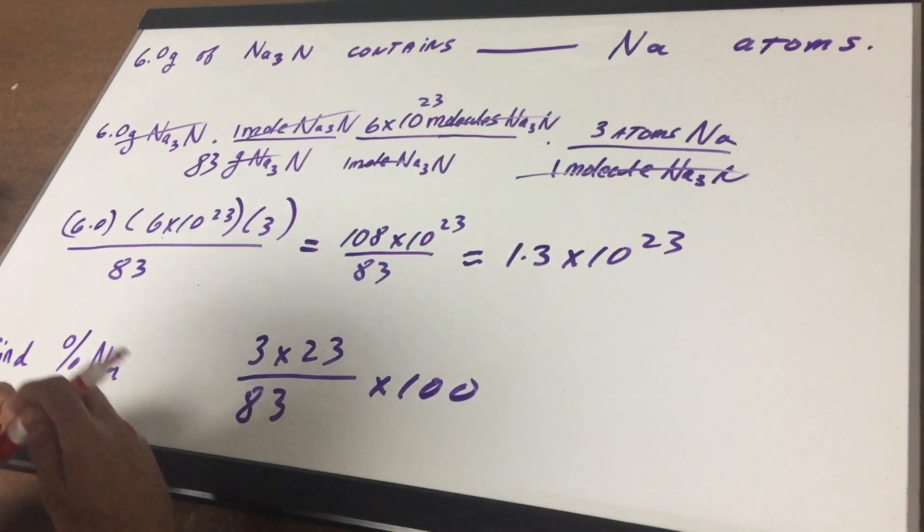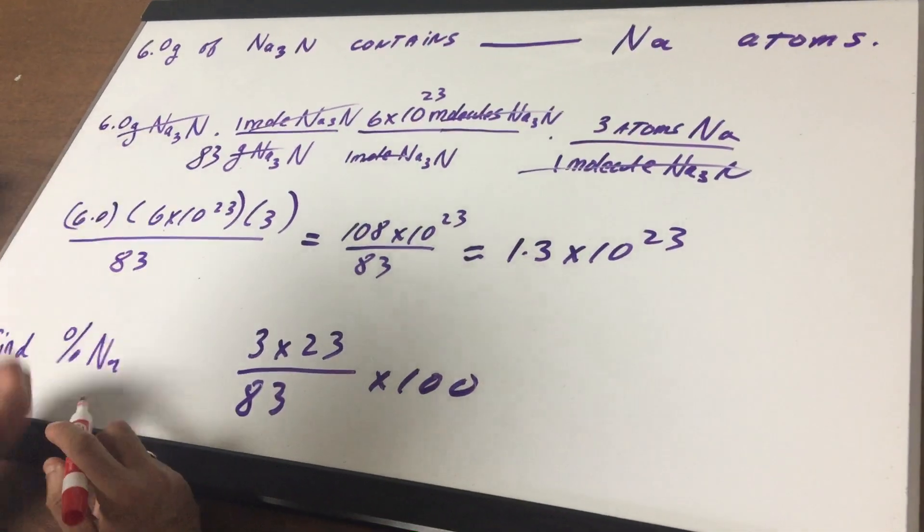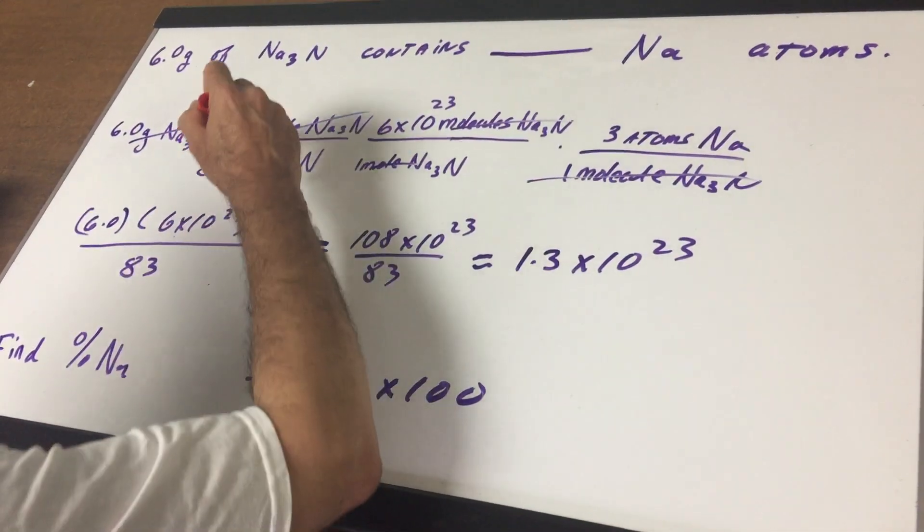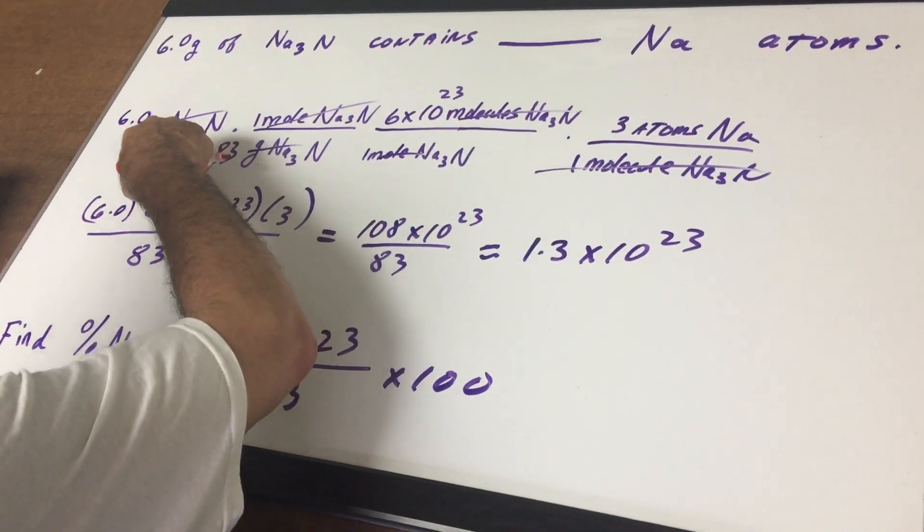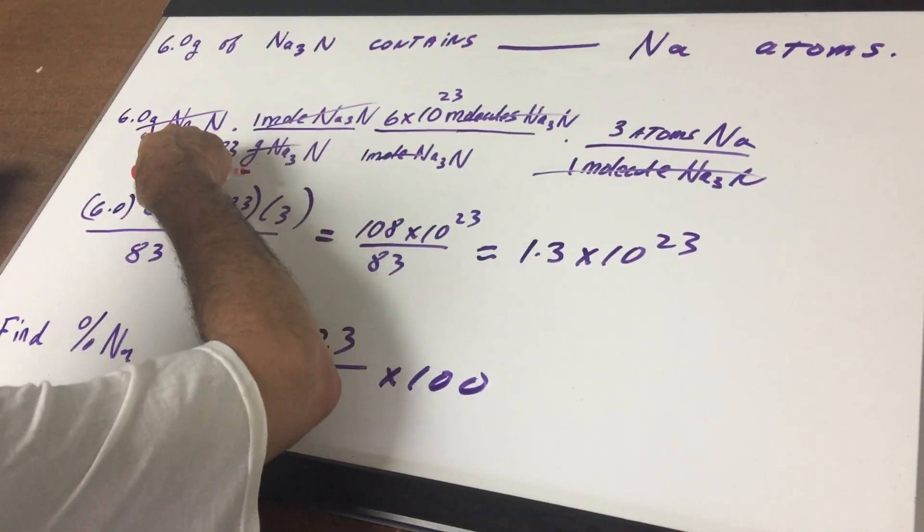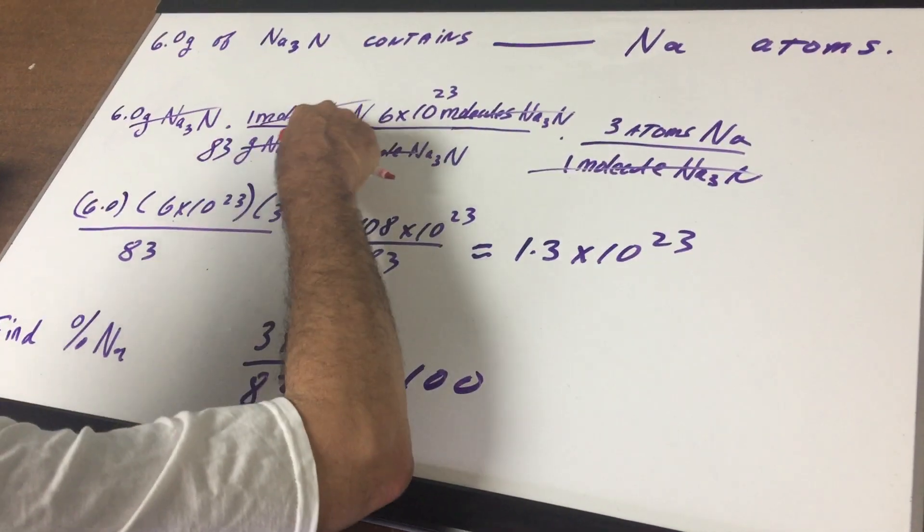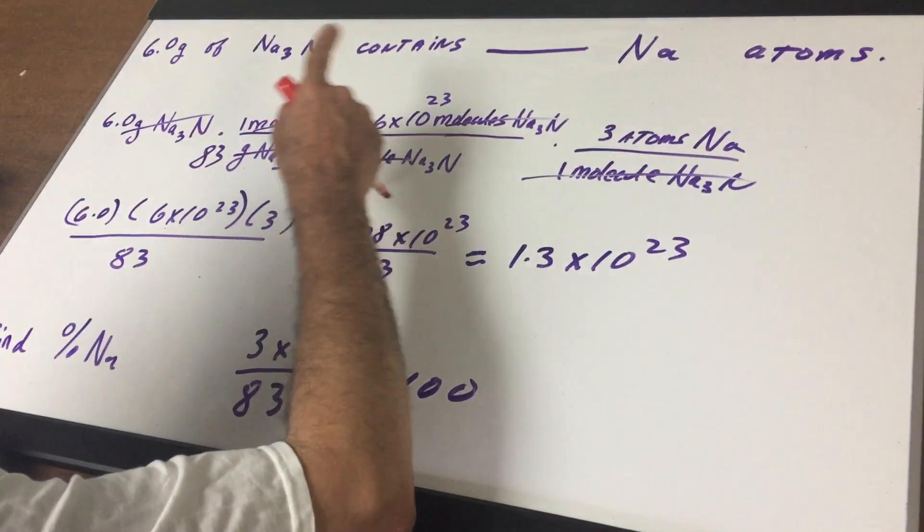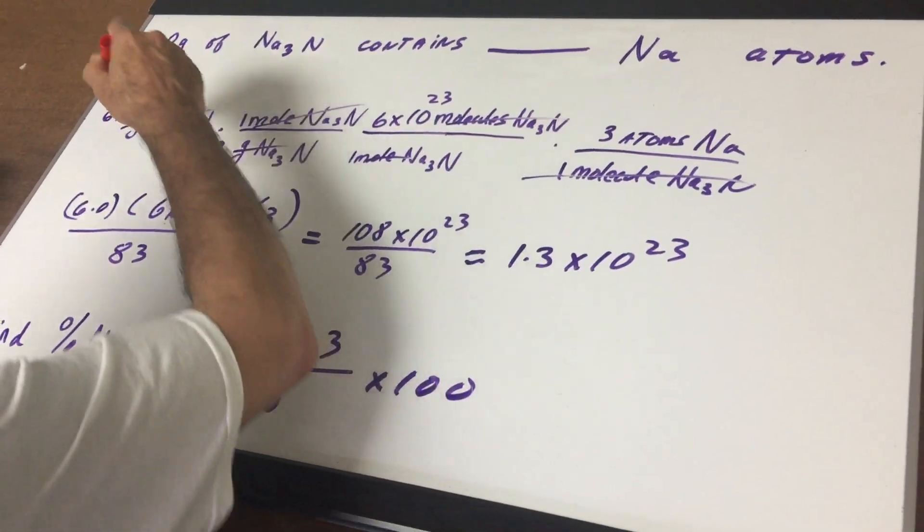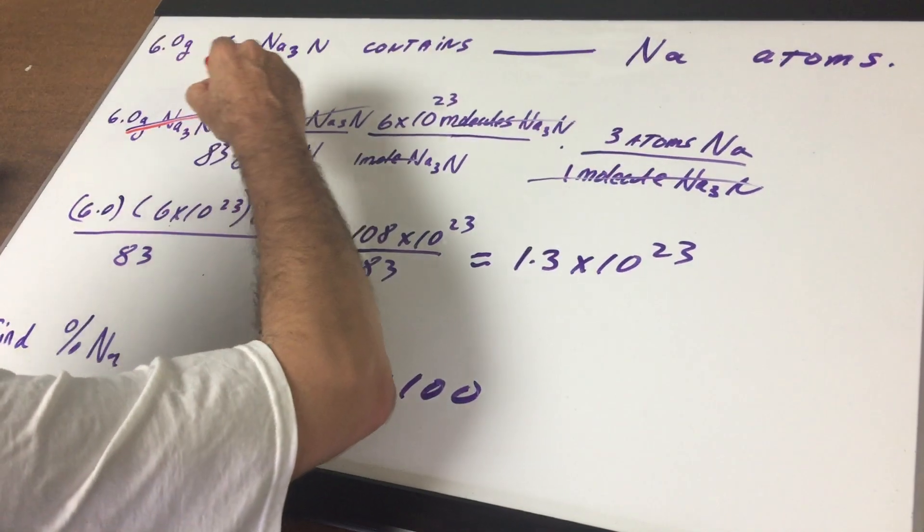Well, the first thing I do is write 6.0 grams. Now, what you want to do is put the same word in the bottom which is grams of Na3N. One mole of Na3N, you look up the weight, weighs 83 and that will cancel out grams.